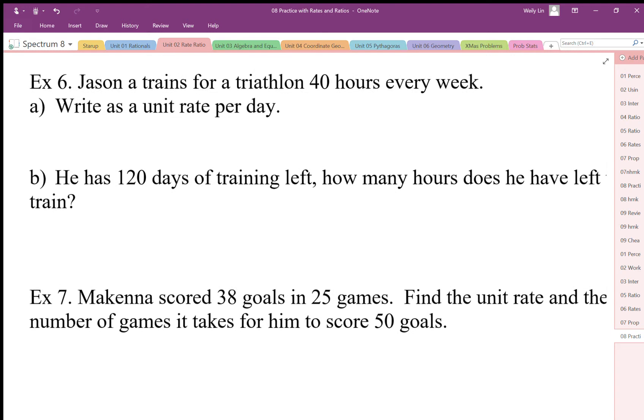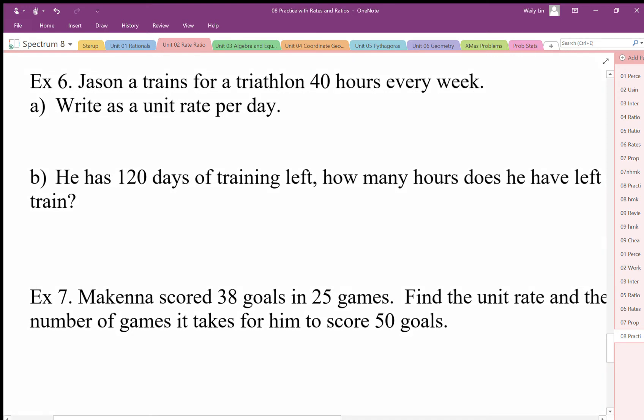Jason's training for a triathlon. He has to train 40 hours every week, like a full-time job. We want to write this as a unit rate per day. So 40 hours every week, I want to write this per day. I can just divide this by seven days, and I get 40 divided by 7 gives us 5.71 hours per day.